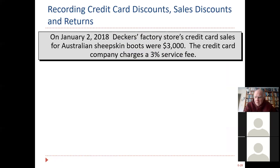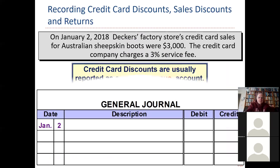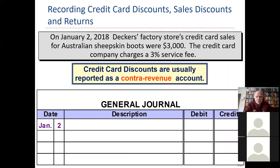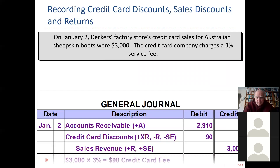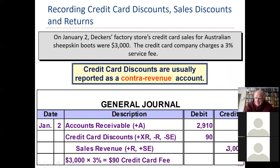Now let's look at a few net sales type things: credit card discount, sales discount. On January 2nd, 2018, Decker's Factory Stores' credit sales for sheepskin boots were $3,000. I went in and spent $3,000 for these sheepskin boots using my Visa card. And Decker's has a legitimate $3,000 credit to sales. But what's the credit card fee? 3% — paid by the seller.